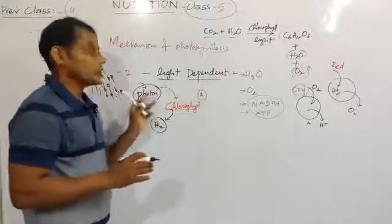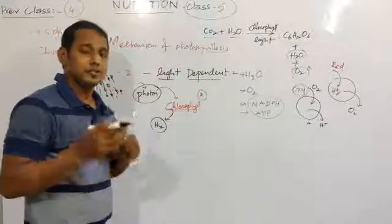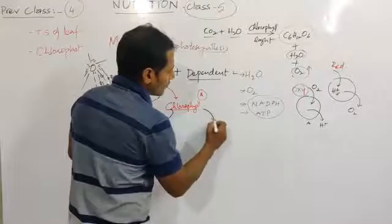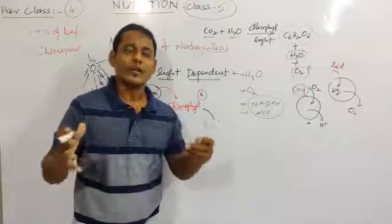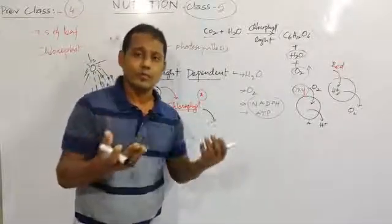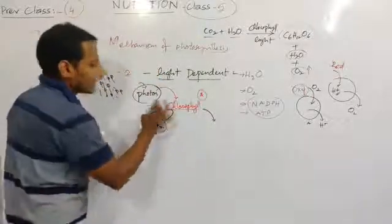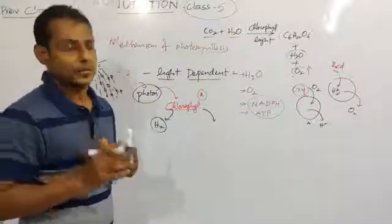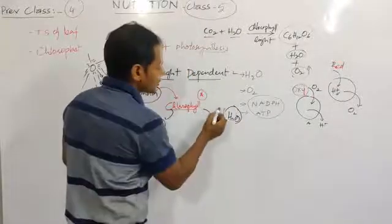Since chlorophyll has lost hydrogen ions, it tries to get hydrogens from another substance, like how we get things from a shop when we need them. Chlorophyll tries to get hydrogen ions from water. Water is used here.